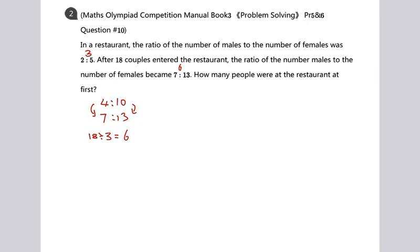And how many people were at the restaurant at first? So there's 14 parts at the beginning. So it's 14 times 6, which we get 84. So there's 84 people at the restaurant at first. All right.